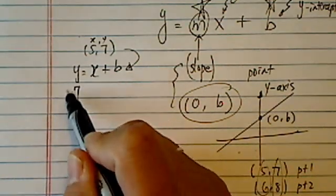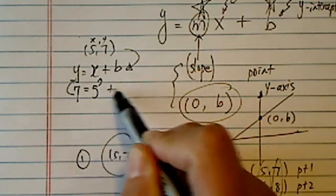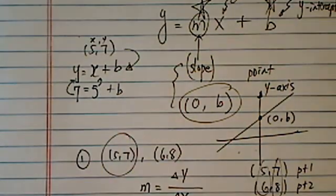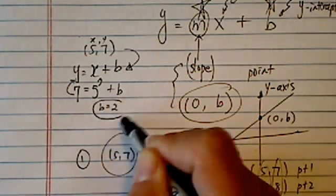Let's plug it in here. y is 7, x has to be 5. Then what b does it take to make this happen? b is equal to 2.